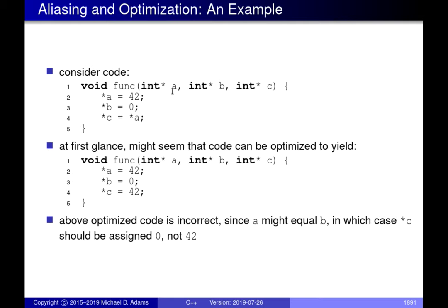The reason it isn't necessarily 42 is aliasing. What if pointers a and b are equal? If you call this function with a and b pointing to the same location, then the optimization would not be valid. If a and b are equal, the first write of 42 is immediately overwritten, because assigning through b is the same as assigning through a. So you write 42 to star-a, immediately overwrite with zero, and then assign that zero to star-c — completely different behavior.